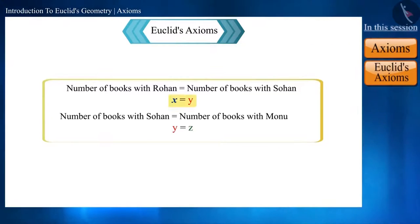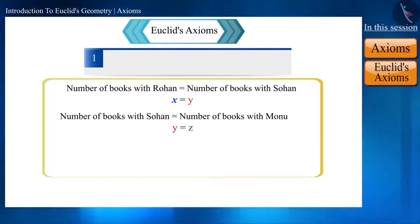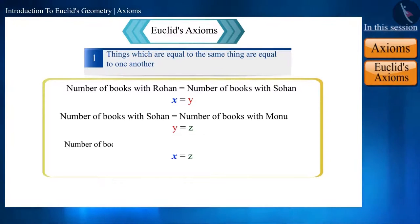Note here, that x is equal to y, and z is also equal to y. Friends, according to Euclid's first axiom, things which are equal to the same thing are equal to one another. So here, x and z will be equal. That is, we can say that Rohan has as many books as Monu.